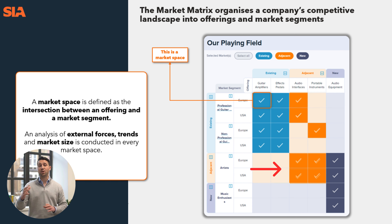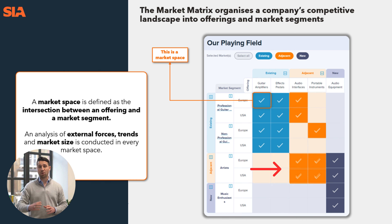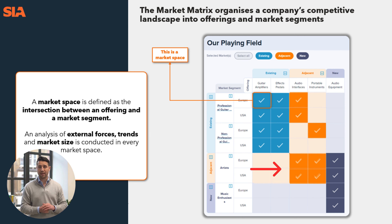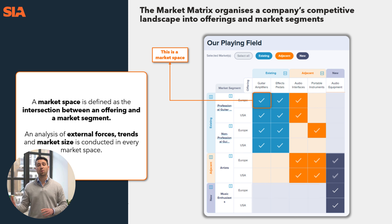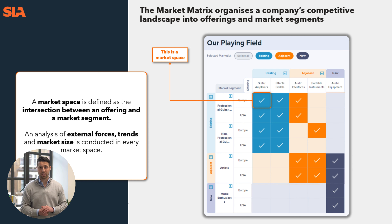We then have adjacencies and entirely new areas. Adjacent areas of offering are products and services close to what we do today, but with some refinements, some adaptation, some iteration. Whereas entirely new offerings are entirely new products and services — not related to, and not close to, what we do today.